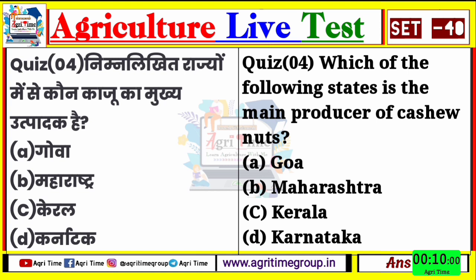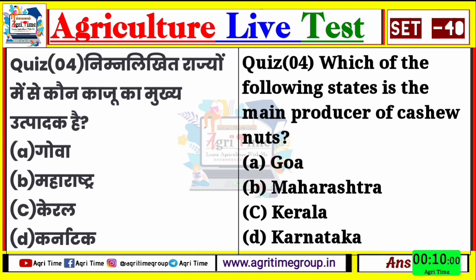Quiz number four का जिनों ने भी C comment किया है, उनका answer right है। केरल, यानि कि केरल - ये काजू का मुख्य उत्पादक राज्य है। चलिए बढ़ते हैं अगले question के ओर question number five।